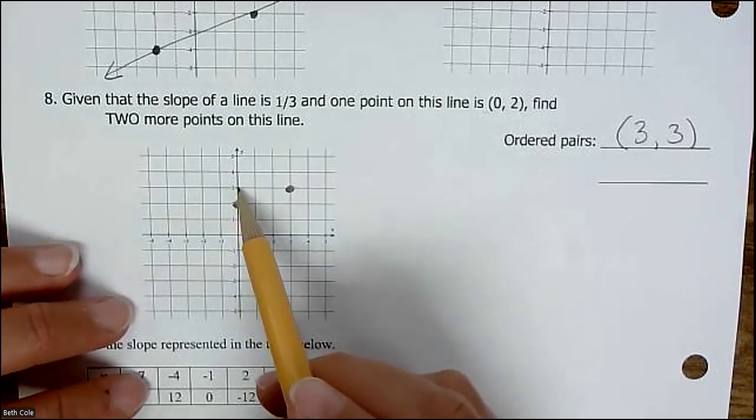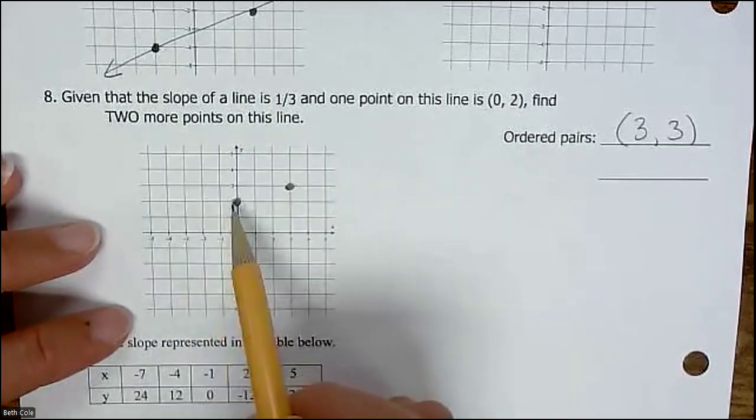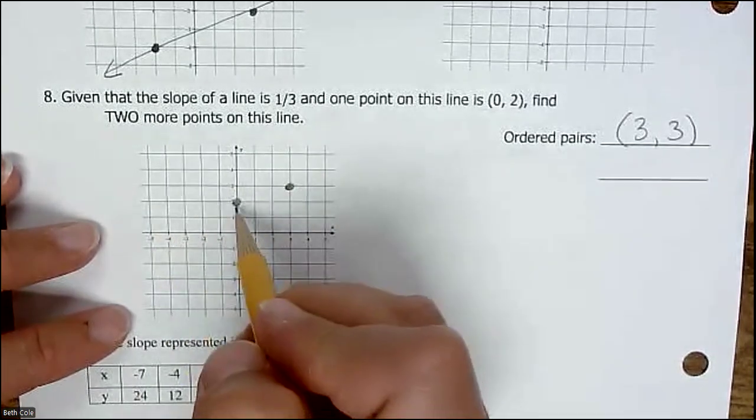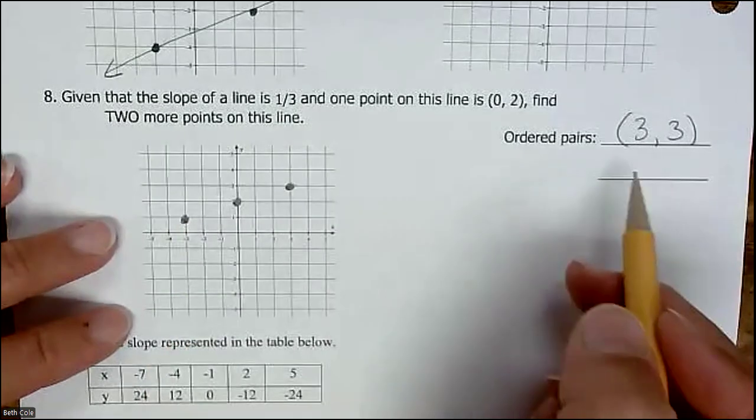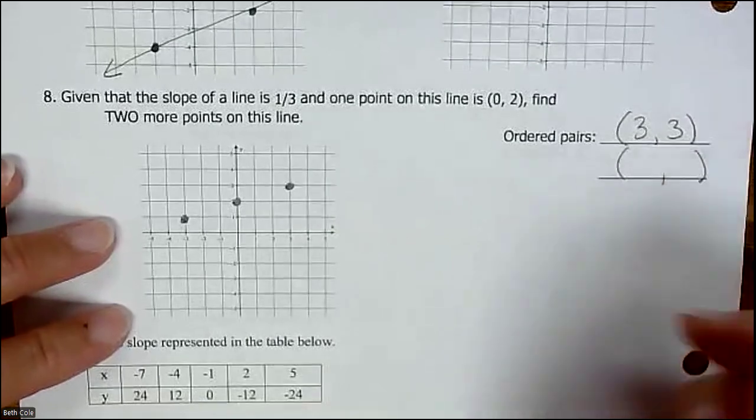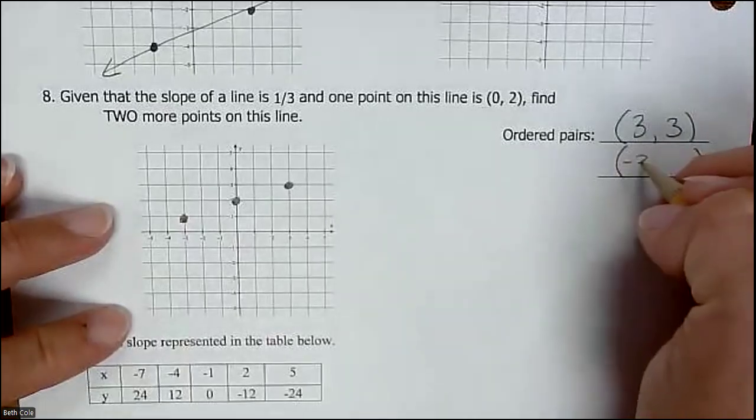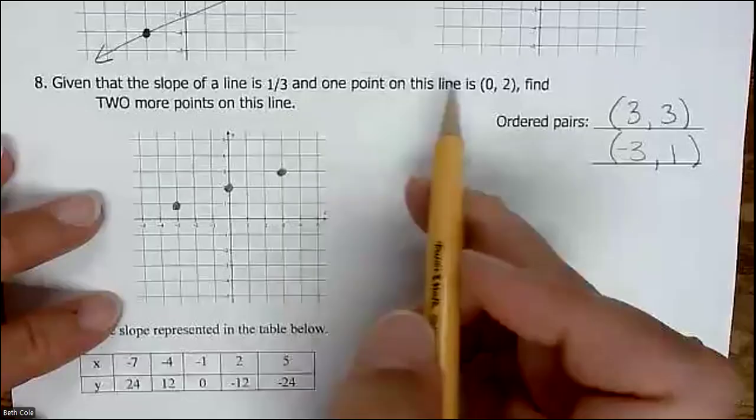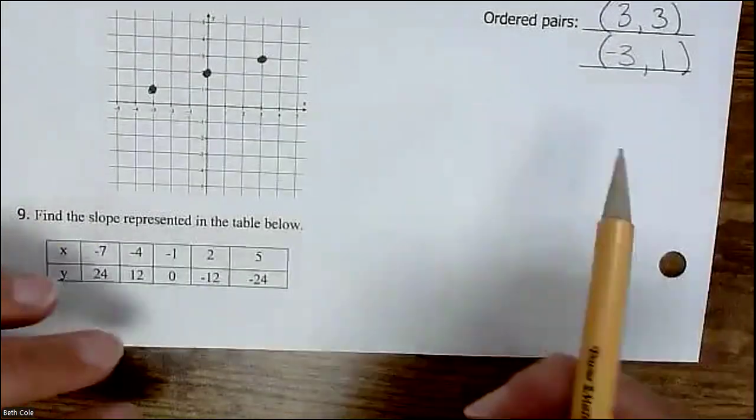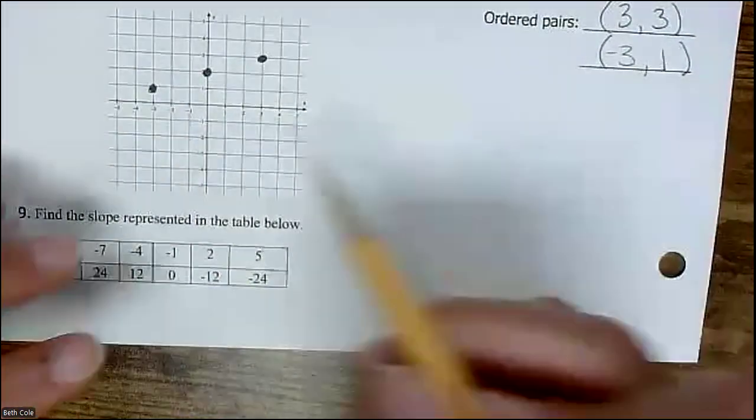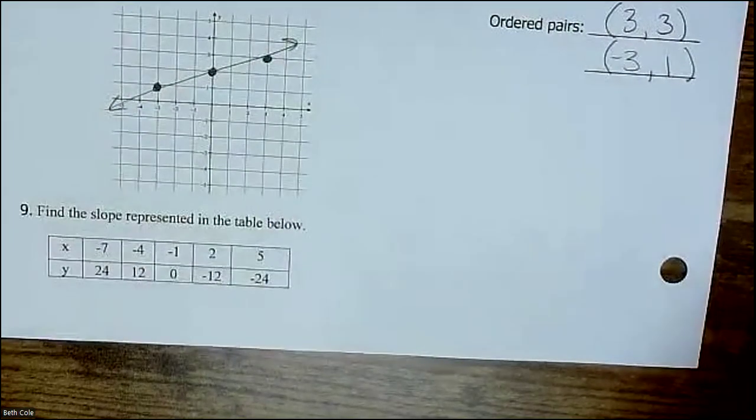We started at 0, 2. We went up 1 over 3. This is the first point I wrote. If I go up 1 over 3 again, I'm going to be off the grid. So instead, I'm going to go down 1 and left 3, so we'll go this direction. That's the other point that I'm going to put over here. This point is negative 3, 1. You start where you're told to start, do the slope, and then list out your extra points that you find that are on the line.